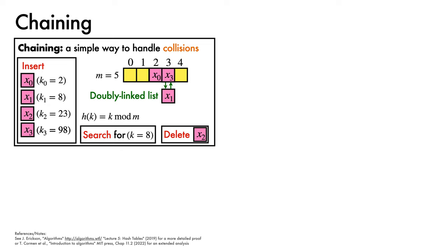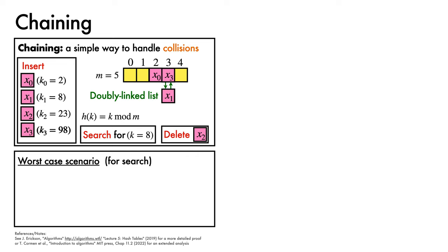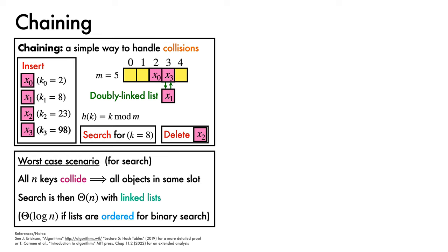Let's now look at how efficient a hash table is going to be with chaining in the worst case scenario. If we've used doubly linked lists, insertion and deletion can be performed in constant time, so we'll focus on the cost of search. The worst case search scenario occurs where all n inserted keys collide, so all objects are mapped to the same slot. In that case, the cost of search is Θ(n), since it requires a linear scan along the linked list containing all n elements, or log n if we've taken the time to keep the list sorted in order to enable binary search.